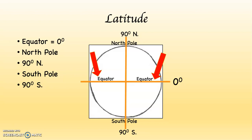If you were standing at the equator and began moving north, you would start counting: zero, one, two, three, four, five — eventually reaching 90 degrees north. If you were at the North Pole and took one step off, you'd begin heading south, going from 90 to 89 to 88 and so on. The same thing happens moving south from the equator: zero, one, two, three — until you reach the South Pole. And from the South Pole heading north, you'd go from 90 to 89 to 88 and so on.